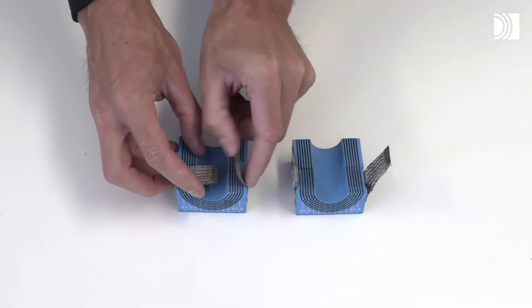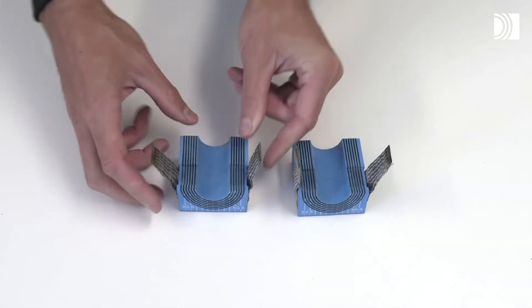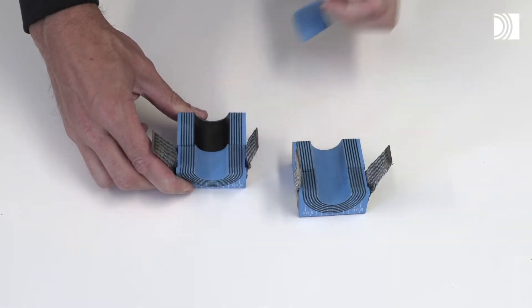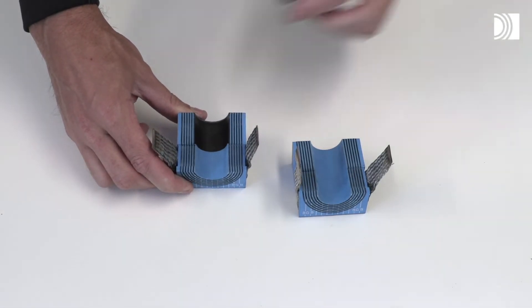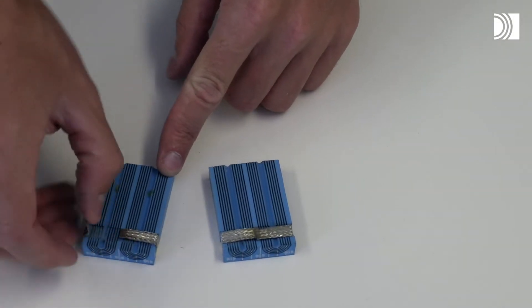Adapt the module to the cable jacket by peeling off layers from the environmental protection side and to the cable armor by removing layers from the termination side. The number of layers must not differ by more than one between the module halves.